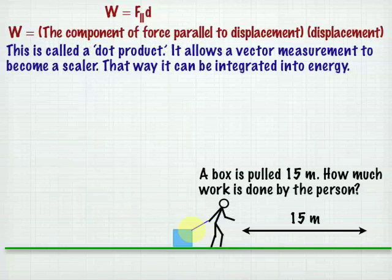Work is equal to F parallel times d. That is, work is equal to the component of force parallel to the displacement times the displacement. In math terms, this is called a dot product. It allows a vector measurement to become a scalar. That way it can be integrated into energy.